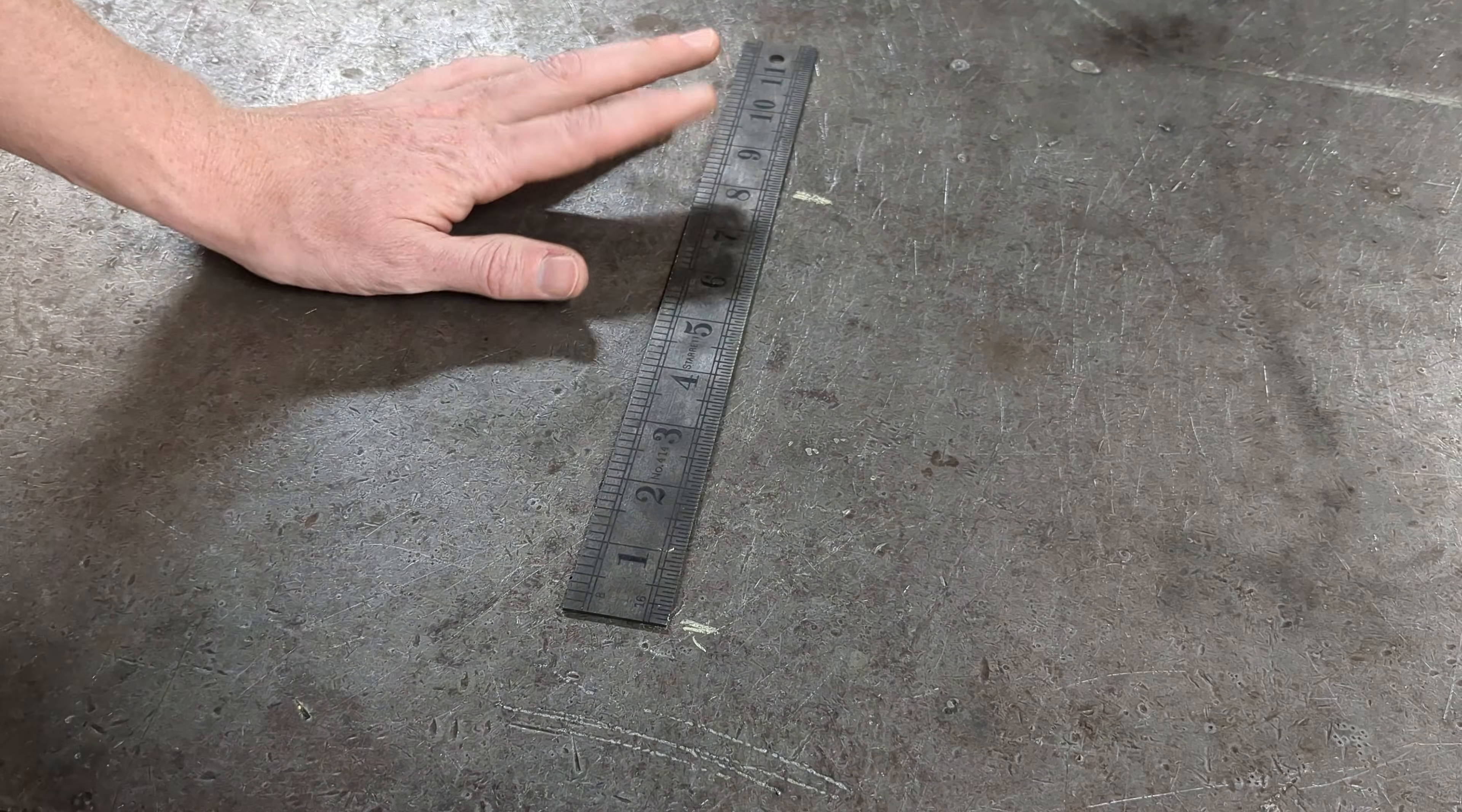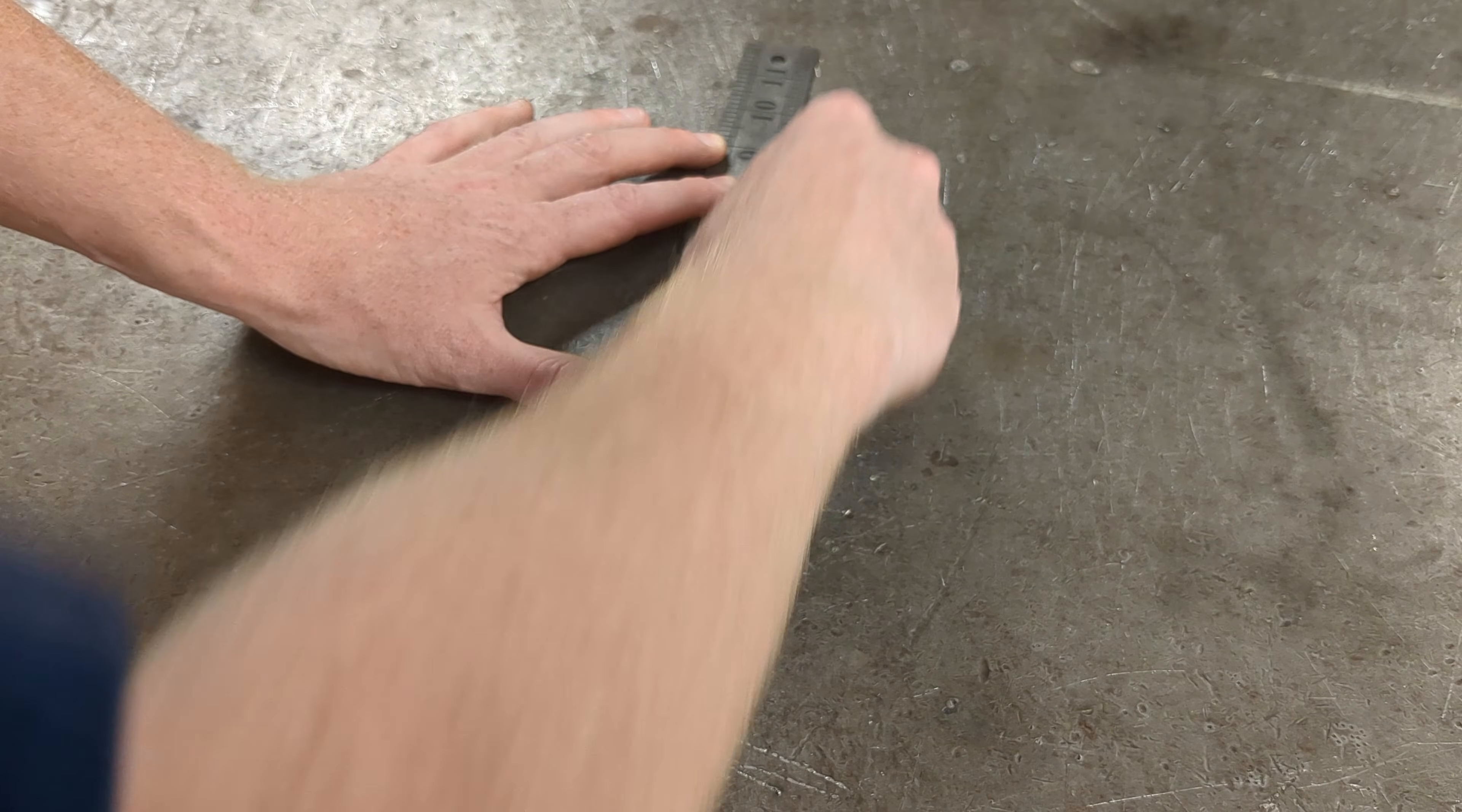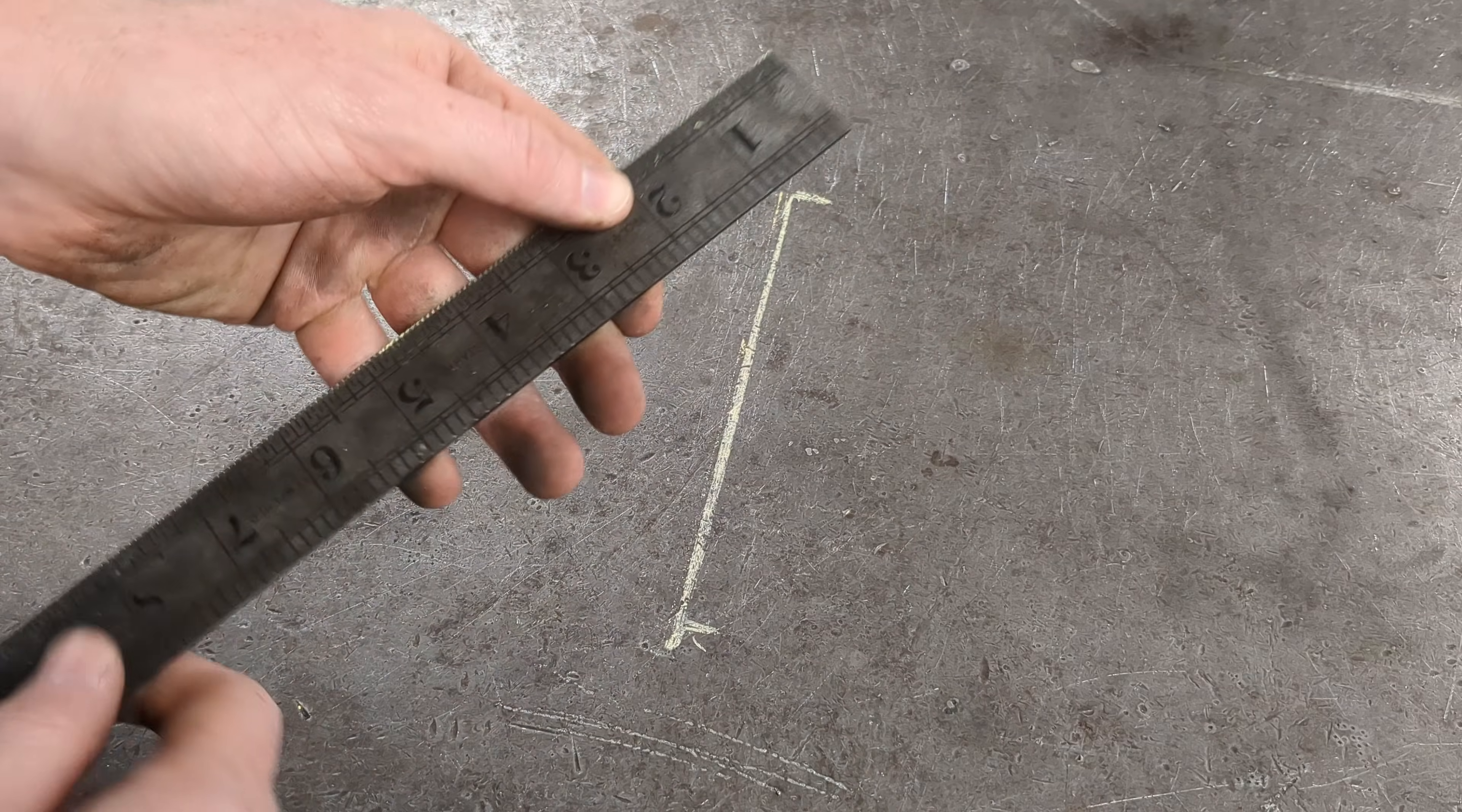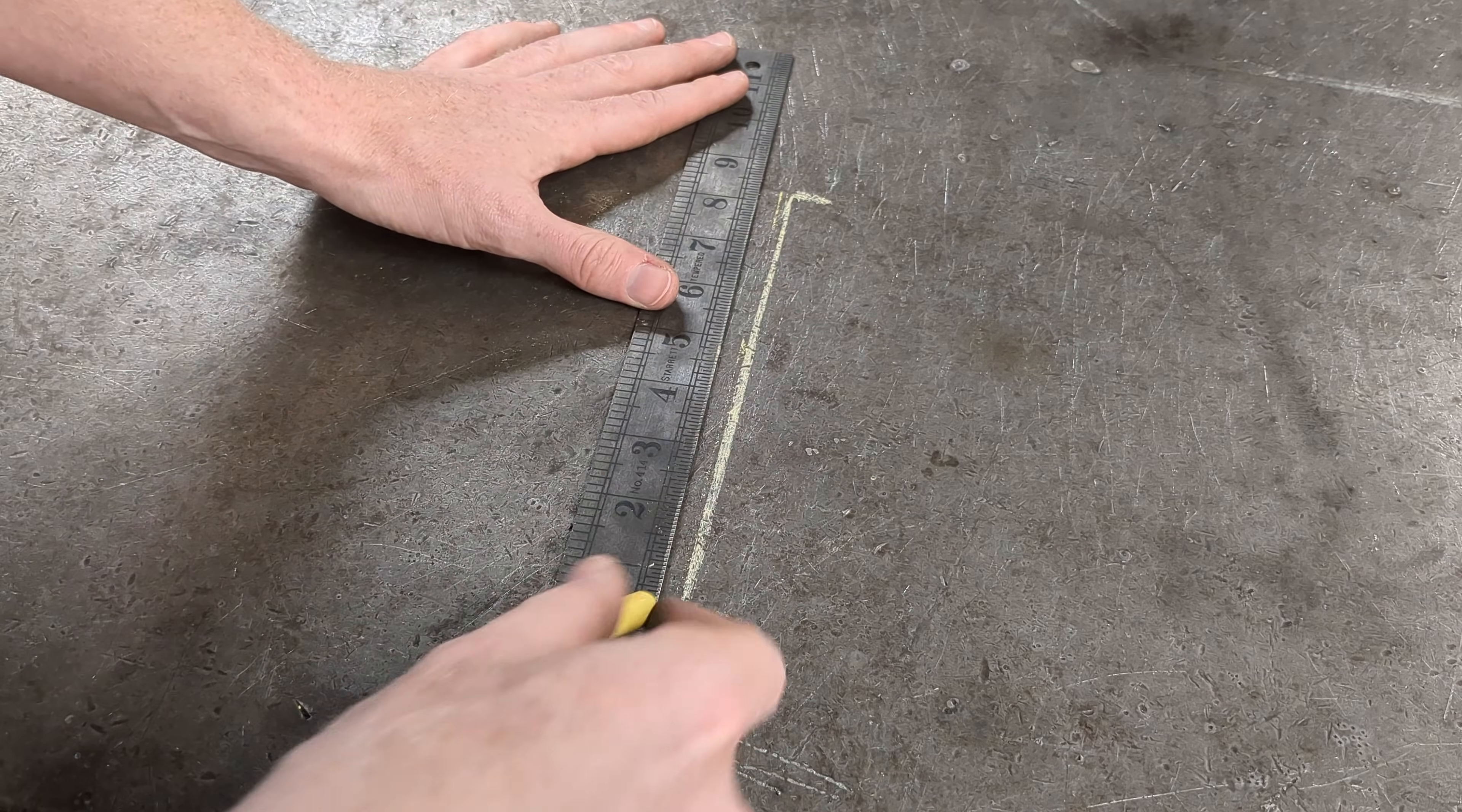Start by drawing a line the length you want each point of your star to be. For this example, I chose 8 inches. Next, divide the length of the line you just drew by 4. So for this example, since my line was 8 inches long, we end up with 2 inches. And then measure up that distance from the bottom of your line and mark it.